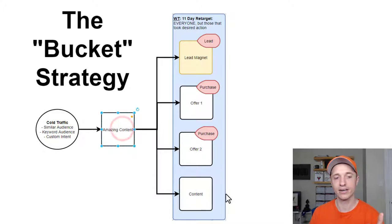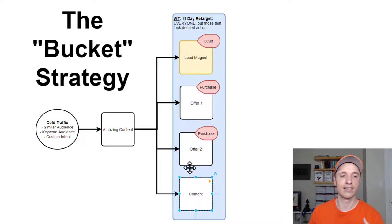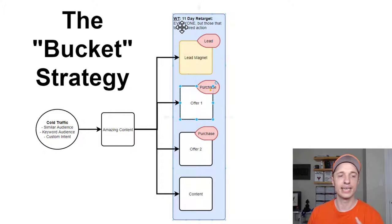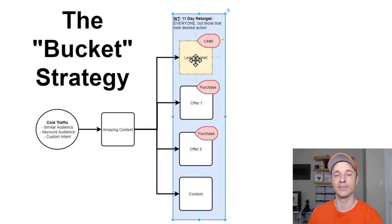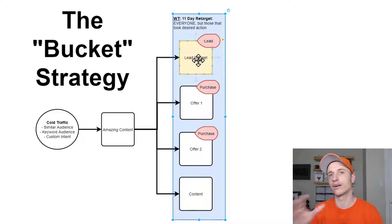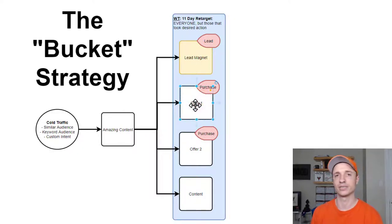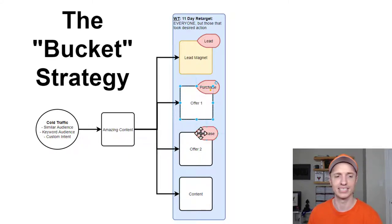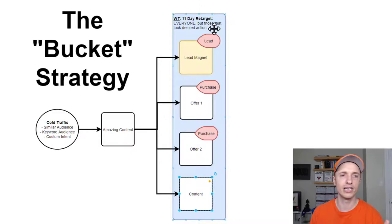That way people are seeing amazing content, and then they're seeing amazing content again and again from you, so they start to like you more and more. Maybe they see your offer again and they decide to buy it. For anybody that has taken the action you want them to take — if they've already opted in for a lead magnet — you would exclude them from that ad, because they've already become a lead and they're already on your email list. Same concept with your offer: if they've already purchased a product or service, no reason to advertise to them again for that same product or service, unless they need more of it. Same thing with content — if they've already consumed that piece of content, don't show it to them again. So you'll exclude anybody that's taken those desired actions.